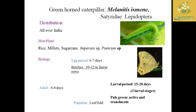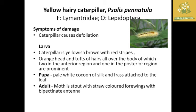Rice hairy caterpillar biology: egg period 4 to 7 days, laid in batches of 10 to 12 in linear rows; larval period 15 to 20 days with three larval stages, pale green and actively translucent; pupation takes place in a leaf fold; adult lives 6 to 8 days. Yellow hairy caterpillar — scientific name Psalis pennatula — causes defoliation. Larval characteristics: yellowish-brown with red stripes, orange head, tufts of hairs all over the body with two prominent anterior tufts and one posterior. Pupa is pale with a cocoon of silk and frass attached to the leaf. Adult is a straw-colored moth with bipectinate antennae.